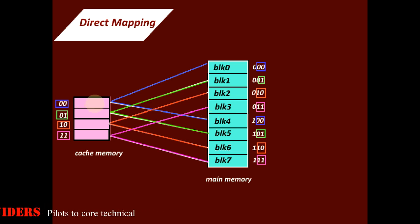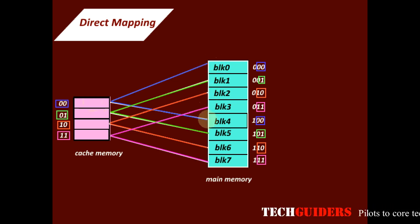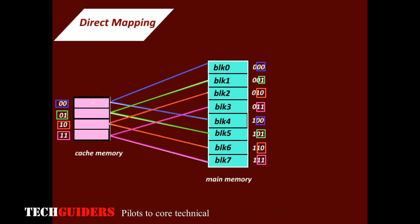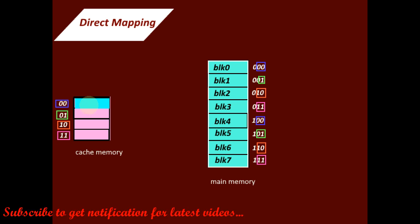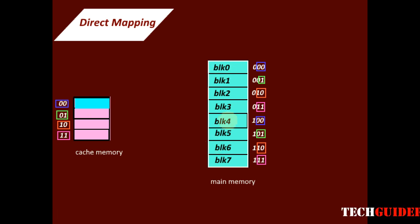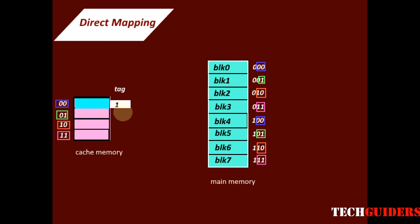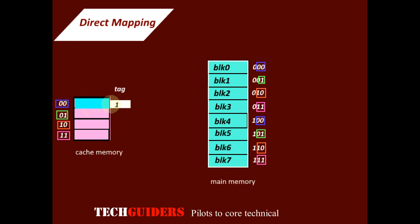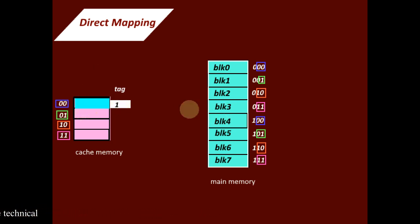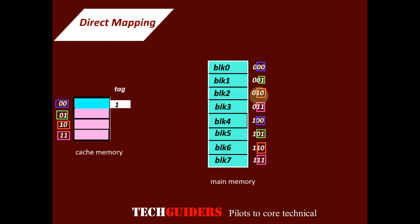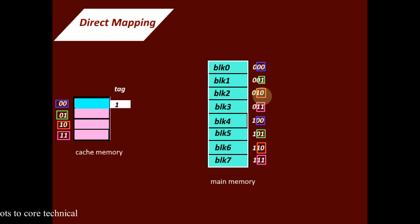At any time, each cache line can hold only one main memory block. So if cache line zero-zero is occupied, it could be either block zero or block four. To identify which block is actually residing on that cache line, we use the remaining bits of the block index as a tag. For example, block two has block index zero-one-zero; its least significant two bits are one-zero, matching a particular cache line, so block two is placed there.